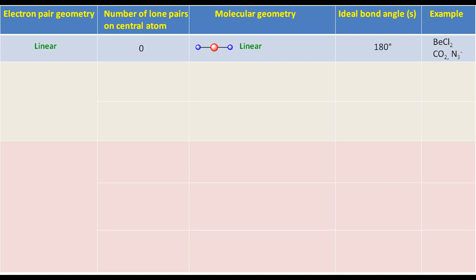If the electron pair geometry is trigonal planar and the number of lone pairs on the central atom is zero, then the molecular geometry will also be trigonal planar. The ideal bond angle will be 120 degrees. BF3, SO3, and CO3 2- are examples of this type of molecule.